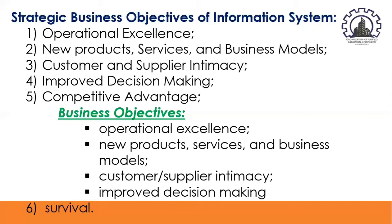For example, Walmart, the largest retailer on earth, exemplifies the power of information systems coupled with state-of-the-art business practices to achieve world-class operational efficiency. In fiscal year 2016, Walmart achieved $499 billion in sales — nearly one-tenth of retail sales in the United States — in large part because of its RetailLink system, which digitally links its suppliers to every Walmart store. As soon as a customer purchases an item, the supplier monitoring the item knows to ship a replacement to the shelf. Walmart achieves sales of more than $600 per square foot compared to its closest competitor Target at $425 per square foot.